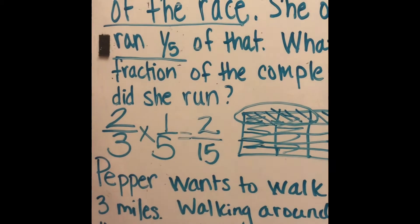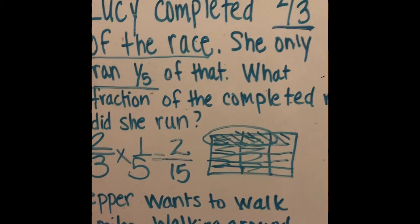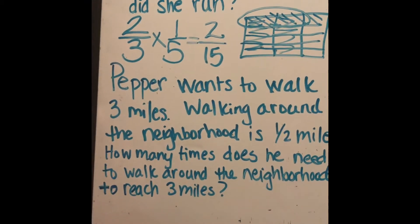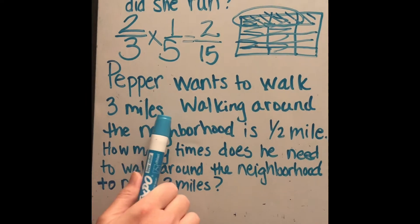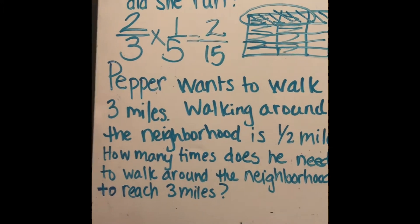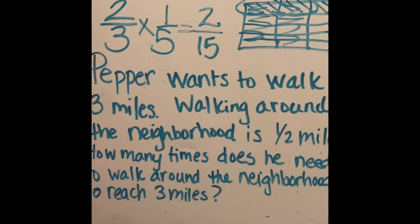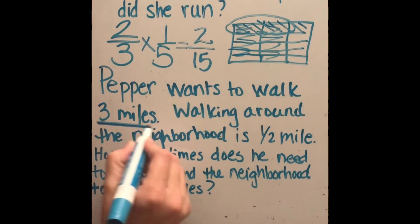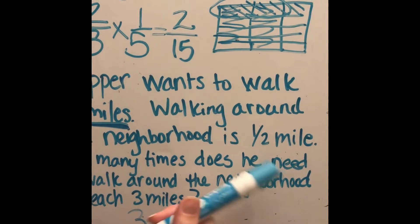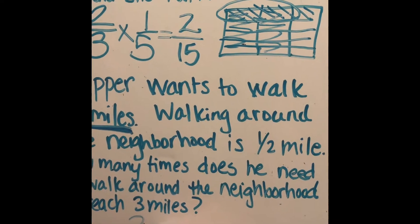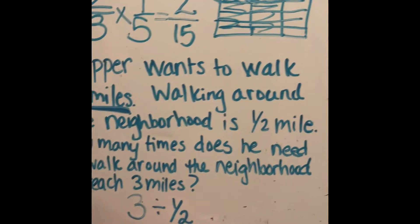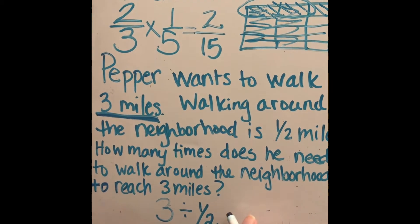She ran two-fifteenths of the completed race. For the second problem, Pepper wants to walk three miles, and walking around the neighborhood is half a mile. How many times does he need to walk around the neighborhood to reach three miles? He wants to walk three miles and one loop is half a mile, so I do three divided by one-half.